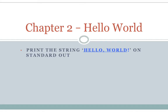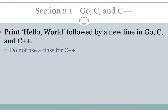Hello, good day and welcome back. Today we're going to start in chapter two and actually start looking at some code. We're going to start by doing a simple hello world program. I'm actually traveling this week so there's going to be a lot of background noise — I'm working from a hotel room. For this hello world program, our requirement is very simple: print the string 'hello world' on standard out. We're going to look at how you do that in Go, C, and C++.